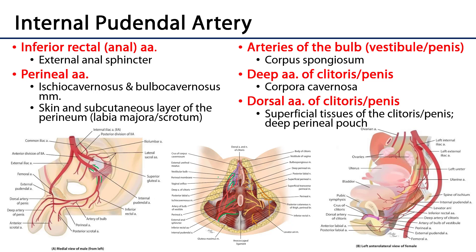There is also a dorsal artery of the clitoris or penis, which takes a similar course to the deep artery except it stays outside of the erectile tissue, serving the superficial tissues about the dorsal surface of the clitoris or penis. To summarize: the artery of the bulb serves the corpus spongiosum, whereas the deep arteries of the clitoris or penis serve the corpora cavernosa.